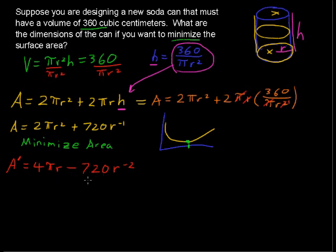So, we will set that equal to zero. So, I'm going to change colors here, and I'll say, 4 pi r minus 720 over r squared, I just rewrote that, equals zero.